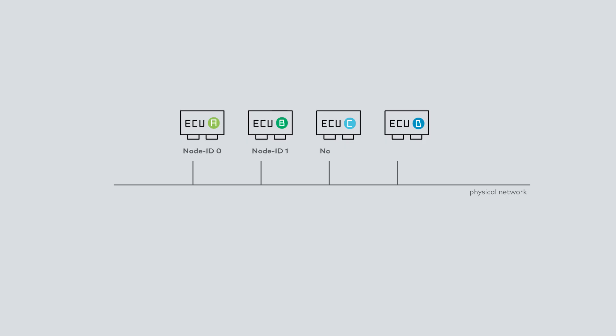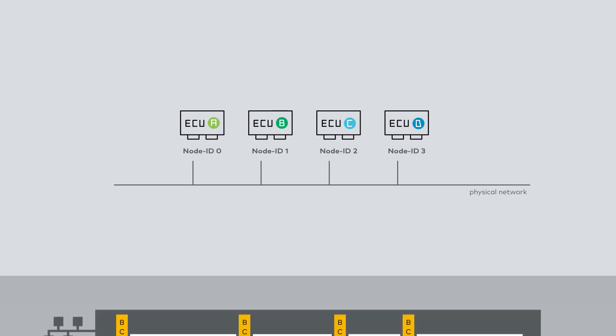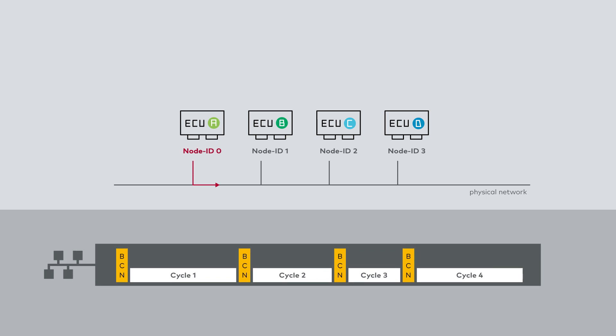Think of the collision-free communication principle of TAN-BASE T1S multi-drop networks. Each node has a fixed node ID and can therefore only send one frame per communication cycle to the network. The question that inevitably arises is: how is it still possible to simulate multiple ECUs on such a network?